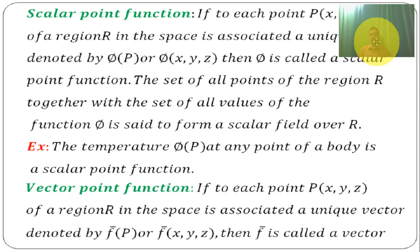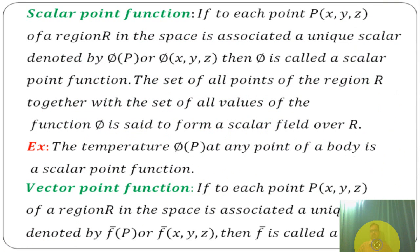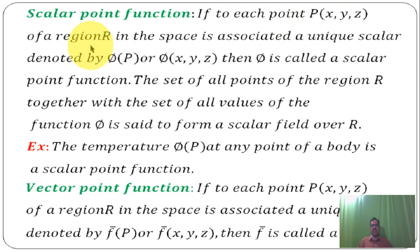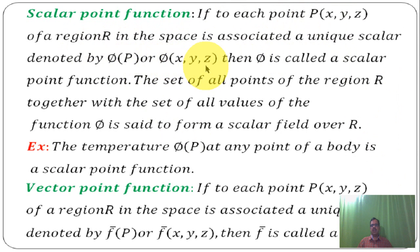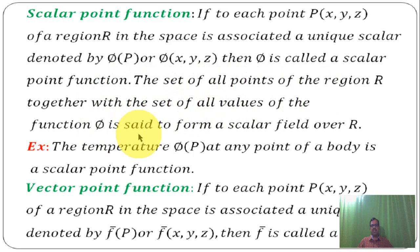What are the scalar point functions? Scalar point function: if to each point p of (x, y, z) of a region R in space is associated a unique scalar, it is denoted by φ(p) or φ(x, y, z), then φ is called a scalar point function. The set of all the points of the region together with the set of all values of the function φ is said to form a scalar field over the region R.